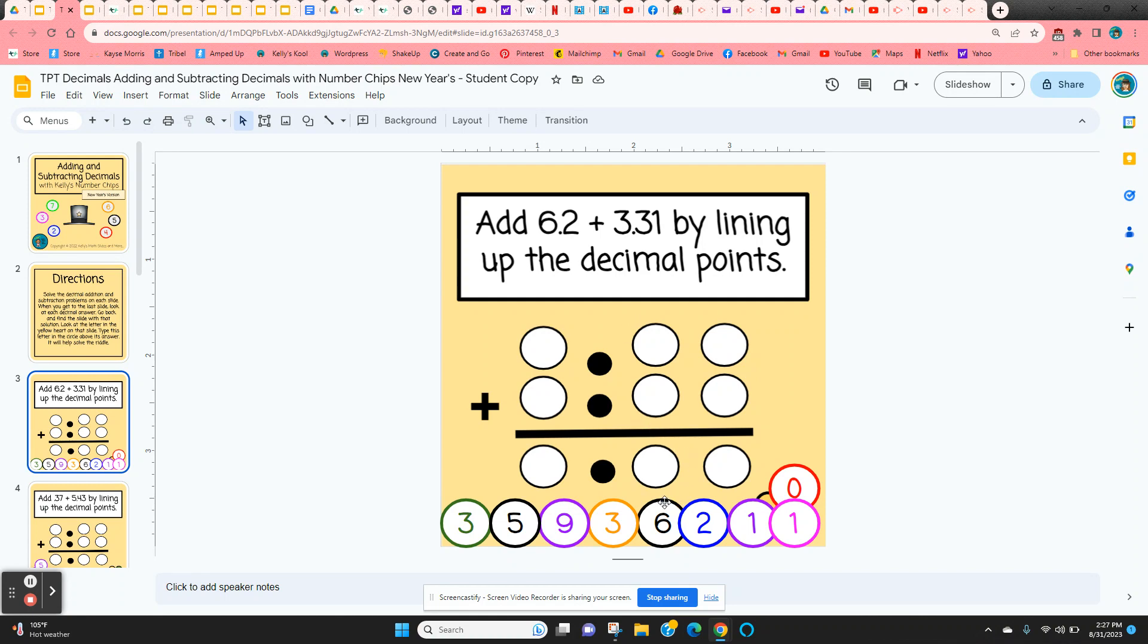So to move these numbers, they just click and hold on the edge. 6 and 2 tenths, the 6 would go here and the 2 would go to the right of the decimal point.